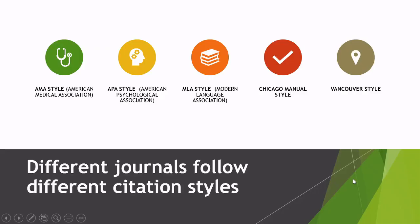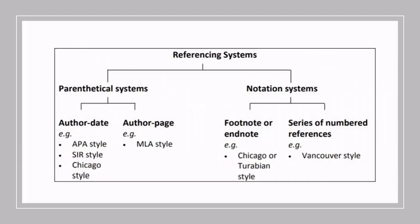Coming to citation styles, different journals follow different styles. For instance, there is MLA (Modern Language Association) style, AMA (American Medical Association), APA (American Psychological Association), Chicago Manual style, Vancouver style, and several other styles followed by journals of different streams.